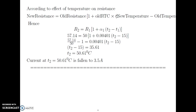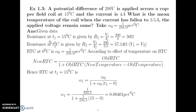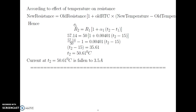According to the effect of temperature on resistance, new resistance equals old resistance times 1 plus old RTC into (new temperature minus old temperature). Here R2 is the new resistance, R1 is the old resistance, alpha1 is the old RTC, T2 is unknown, and T1 is known. So R2 equals R1 times (1 plus alpha1 times (T2 minus T1)). With R1, R2, and alpha1 all known, the only unknown is T2. Substituting all values gives T2 equal to 50.61 degree Celsius.